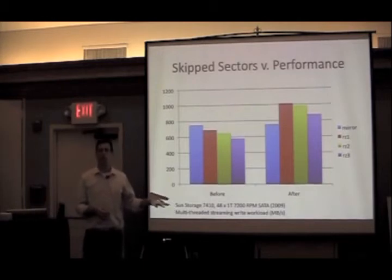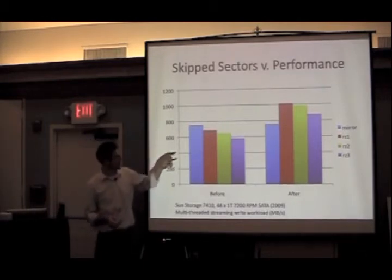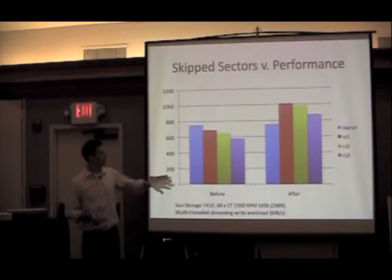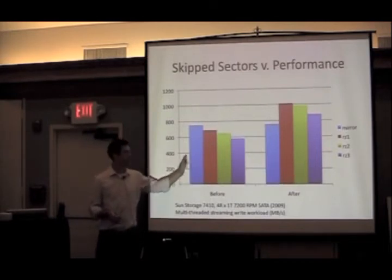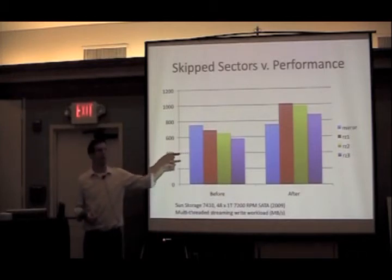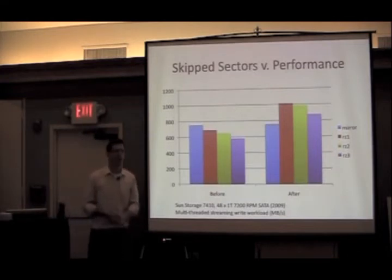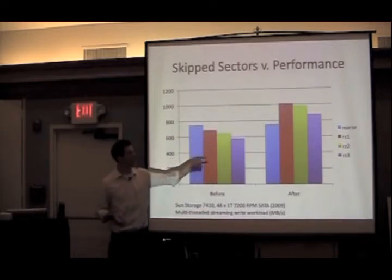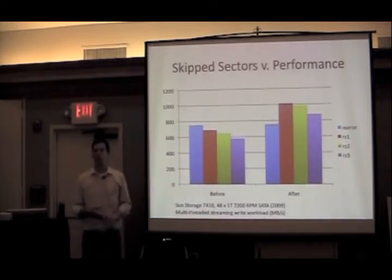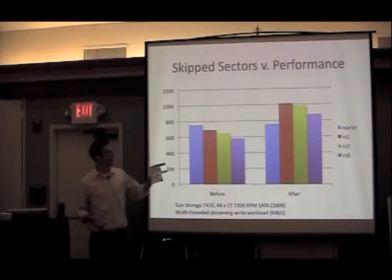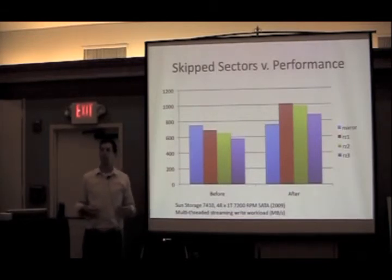This benchmark was done with the Sun Storage 7410 with 48 one-terabyte 7200 RPM SATA disks, running a multi-threaded streaming write load. The numbers are megabytes per second. In order we have mirroring, RAID-Z1, RAID-Z2, and RAID-Z3. Before the fix, mirroring was dominating. After the adjustment to include the optional IOs, RAID-Z1 went from about 650 megabytes per second to almost a gigabyte per second — a tremendous performance improvement.